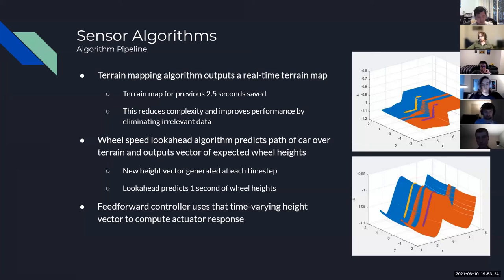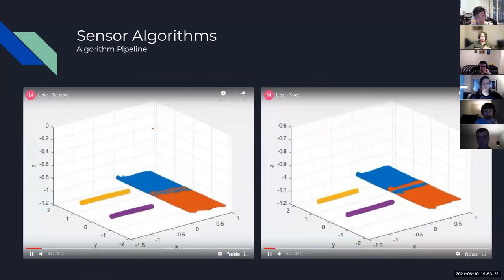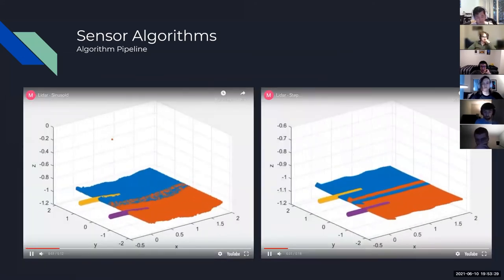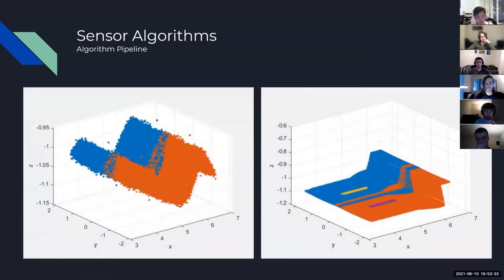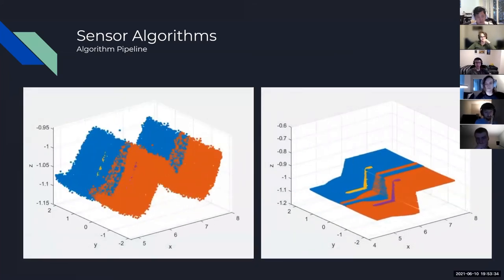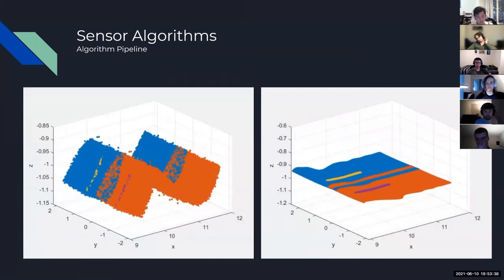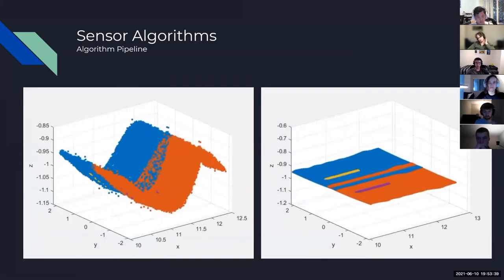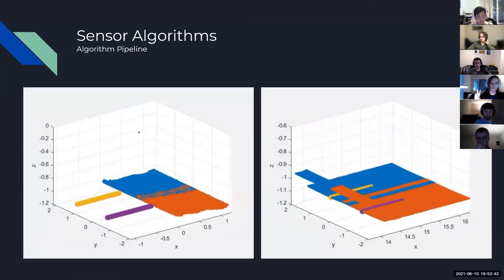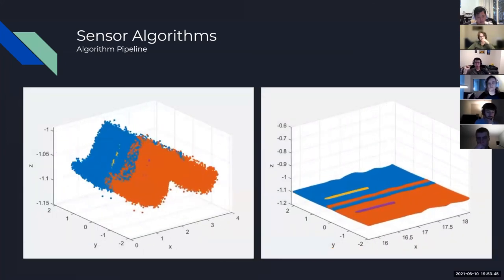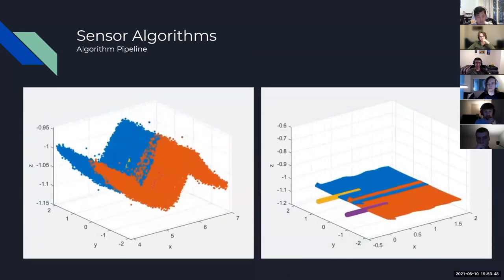Here are videos showing what a real-time simulation of this LiDAR mapping and lookahead algorithm pipeline looks like. The yellow and purple traces are the expected wheel travel for the next second, and the orange and blue are the terrain from the left and right LiDAR sensors.